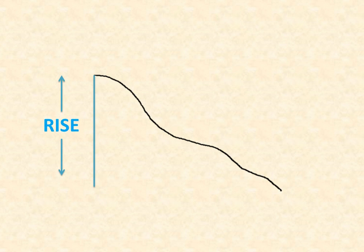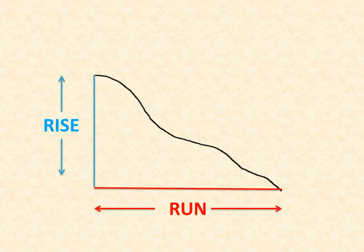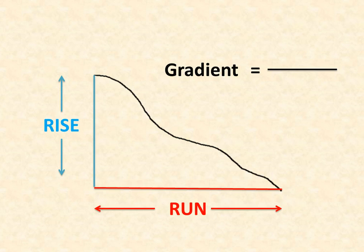So here we have a slope, and in order to calculate how steep it is we need to know two things. We need to know its rise — how high it is — and we also need to know its run — how long the slope is. We calculate that using a very simple equation: gradient is equal to rise over run.